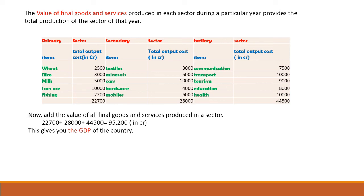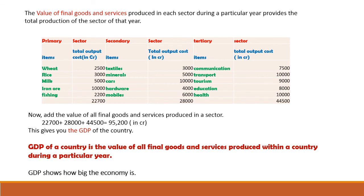When we add the value of all the final goods and services produced across all sectors, we get 95,200 crores of rupees — and this gives you the GDP, that is Gross Domestic Product of the country. The GDP of a country is the value of all final goods and services produced within a country during a particular year. GDP shows how big the economy is.